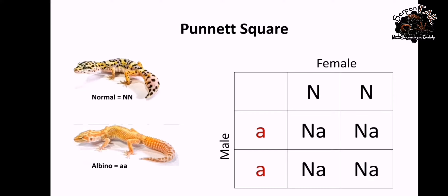So as you can see, on the left side, which is two small letter A — that is the trait of the male. And at the upper right, that is the female, which is two capital N, signifying normal. So as you can show on the diagram, all of their offspring are normal het albino. Then let's look at the other part of the diagram.